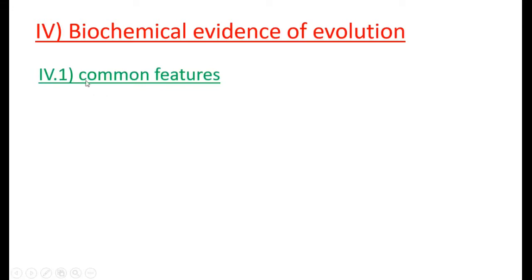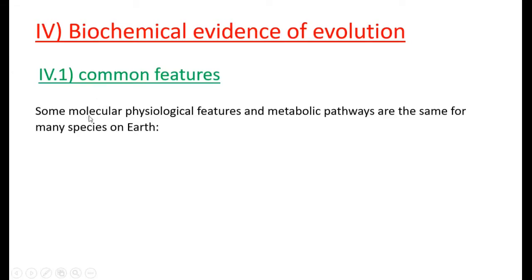So 4.1, we're going to look into these common features. Some molecular physiological features and metabolic pathways are the same for many species on Earth. These key features and pathways we've studied this year. The first one is the genetic code. When we talked about protein synthesis, we said that many species, almost all species, have the same genetic code. So that is an indicator that they probably had a common ancestor.